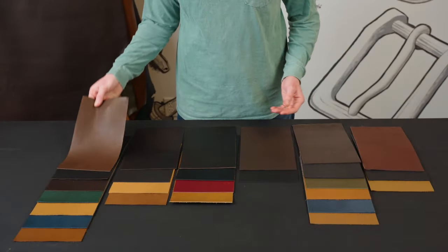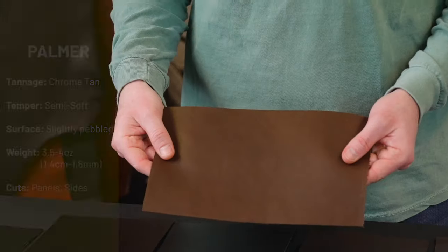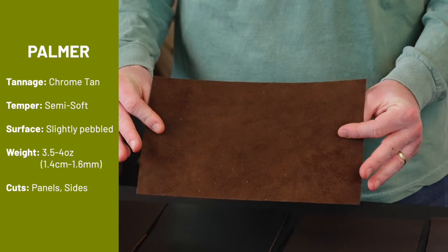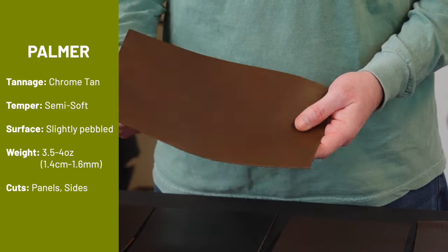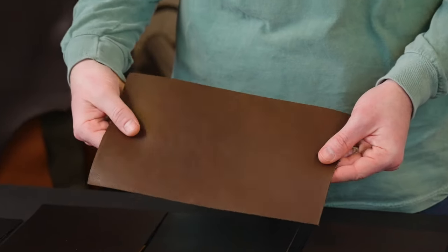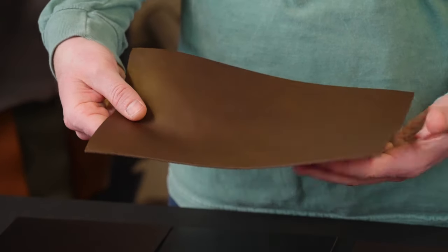Starting with the Palmer. The Palmer is the most popular of the Richard Hoffman's Leather. It is tumbled to give it a slight pebbling on the grain. Not too pronounced, but slight pebbling.